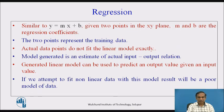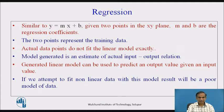If we look at that formula, it is similar to the equation of a straight line studied in school: y = mx + b, where given two points in the xy plane, m and b are the regression coefficients. The two points represent the training data. Actual data points do not fit the linear model exactly, so the model generated is an estimate of the actual input-output relationship. The general linear model can be used to predict an output value given an input value.